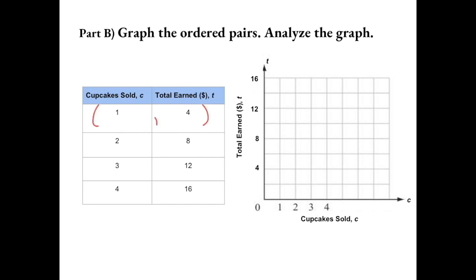So my first ordered pair would be 1, 4. So 1, 4 would be here.